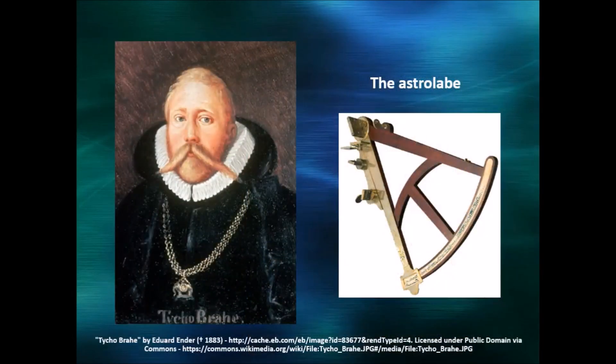What Brahe did was collect lots of accurate data on the motion of stars and planets across the sky. He used instruments like the astrolabe to do this. The telescope had not yet been invented.